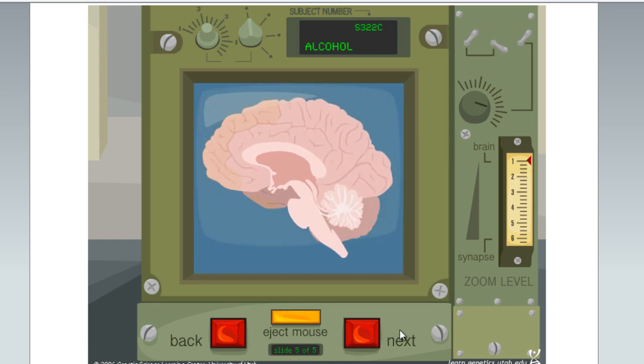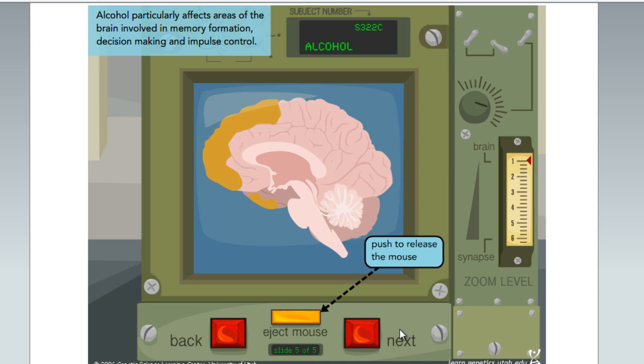Alcohol particularly affects areas of the brain involved in memory formation, decision-making, and impulse control.